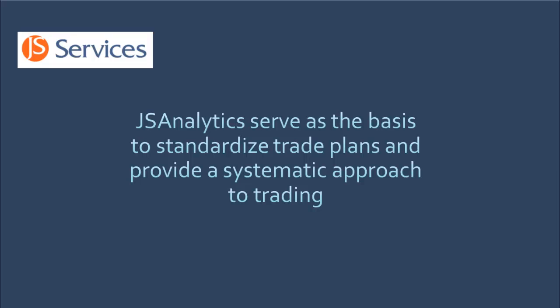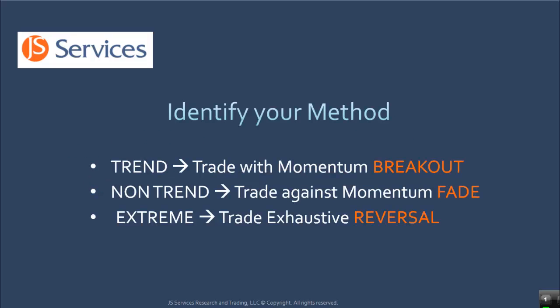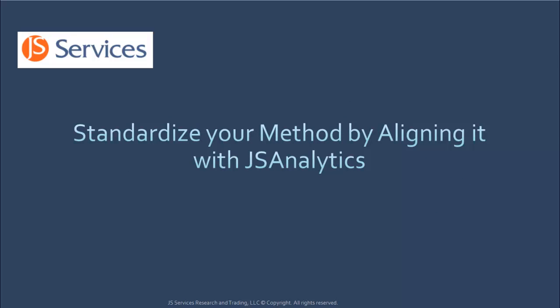JS analytics serve as the basis to standardized trade plans and provide a systematic approach to trading — standardized, meaning to cause to conform to a standard. Before you can standardize your method, you need to identify it. Generally, as a directional trader, your methods or tactics will be classified as either trading with momentum, trading against momentum, or an exhaustive reversal. You should identify every trading tactic and decision process you make to execute a trade as either a breakout, fade, or reversal classification. To systemize your approach, you want to standardize your method by aligning it with JS analytics with the goal of creating a more sustainable trade plan.